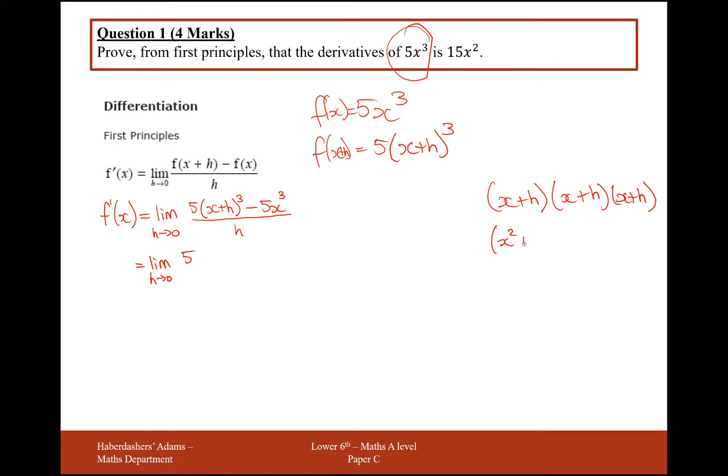Expanding the triple bracket, we'll get x²+2xh+h². And times that by the third bracket (x+h) will get x³+3x²h+3xh²+h³.